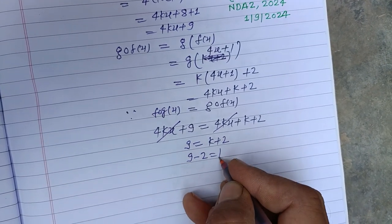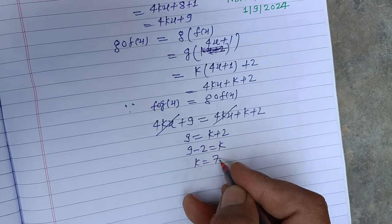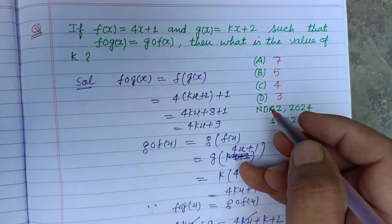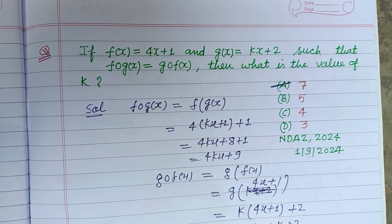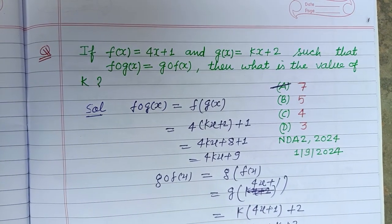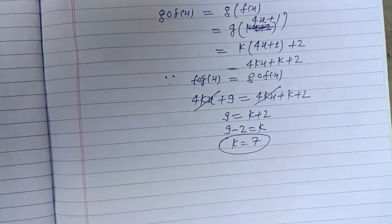Therefore 9 minus 2 equals k, so k equals 7. The value of k is 7, which is option A. Therefore option A is correct. I hope you got it. Please like the video and subscribe to the channel. Thanks for watching.